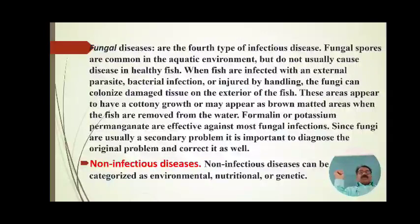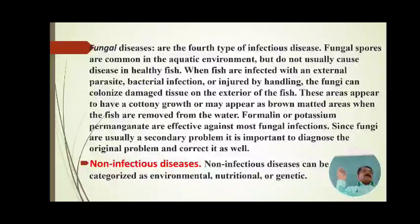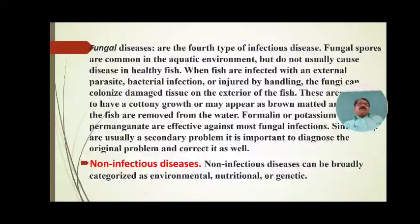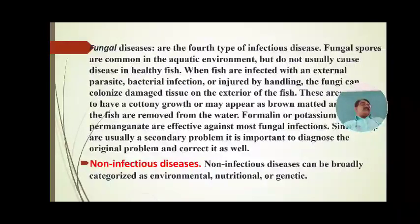Formalin and potassium permanganate are effective against most fungal infections. Since fungi are usually a secondary problem, it is important to diagnose the original problem and correct it as well. Fungi grow when animals become weak, susceptible, or lethargic. All four types of infectious fish diseases — parasitic, viral, bacterial, and fungal — affect fish populations and decrease fish growth, impacting fish culturists and farmers.